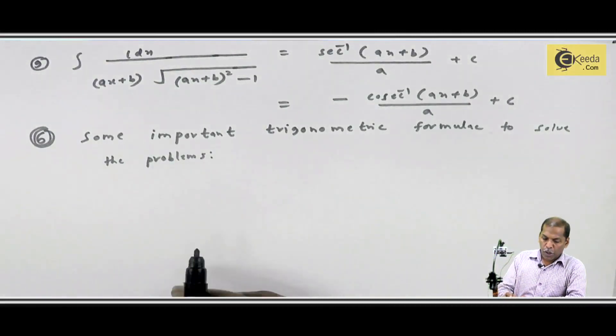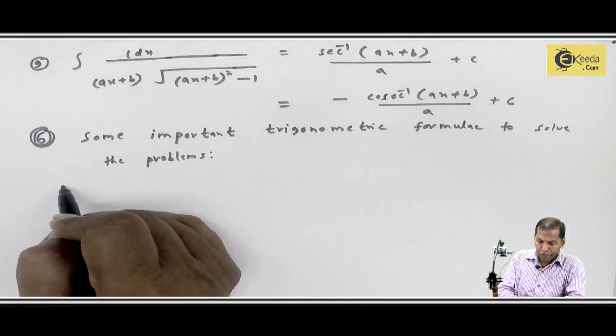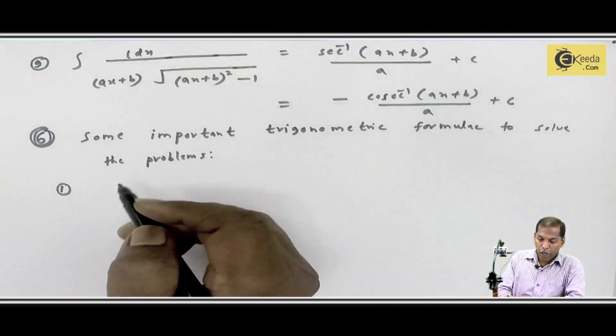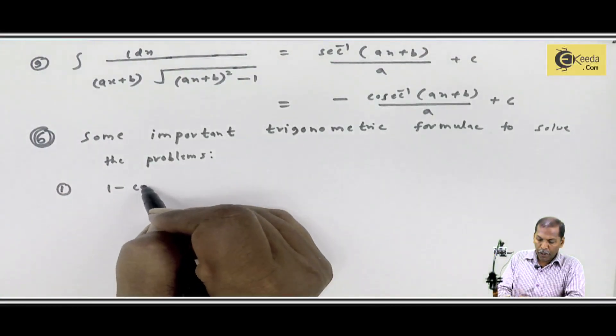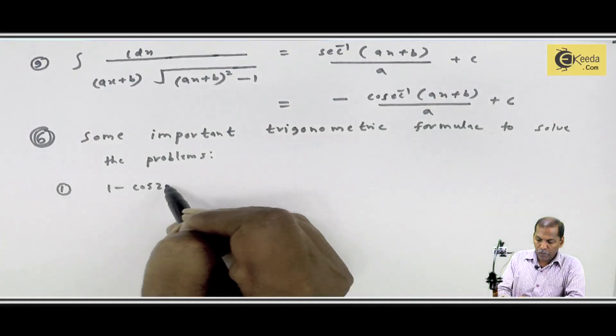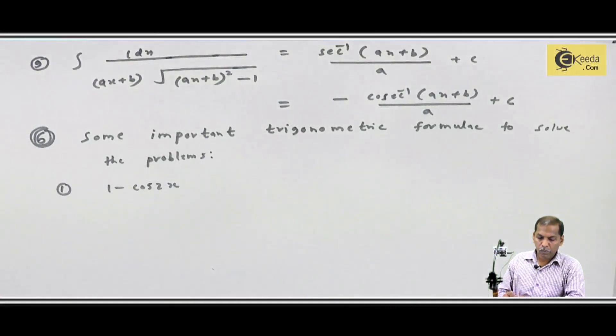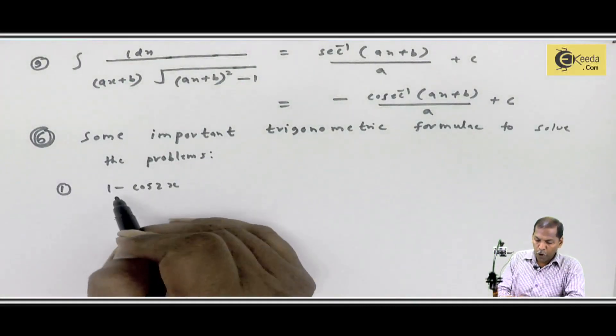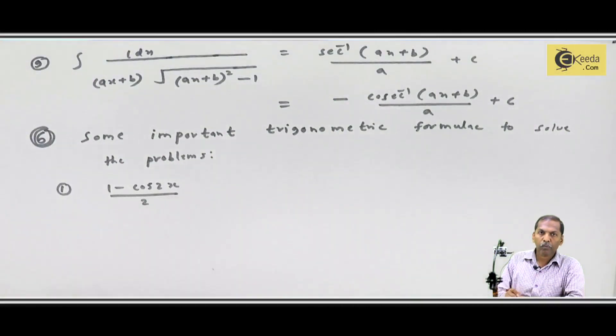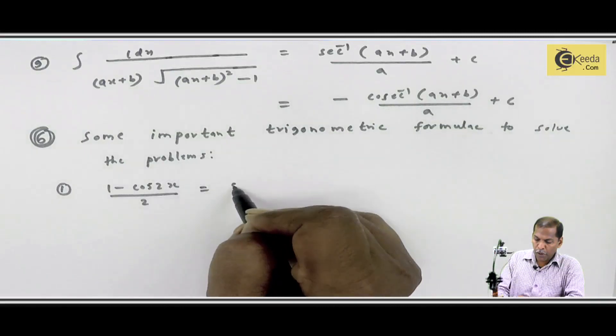So the first formula is 1 minus cos2x upon 2, which we can write as sin²x.